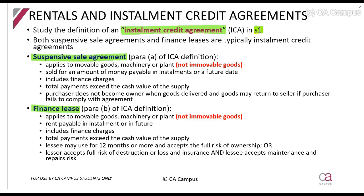What is a suspensive sale agreement? A suspensive sale agreement is where I sell you something today and say pay me off over the next three years, and only at the end of the three years do you become the actual owner of it. So it is basically just paying it off over a period.